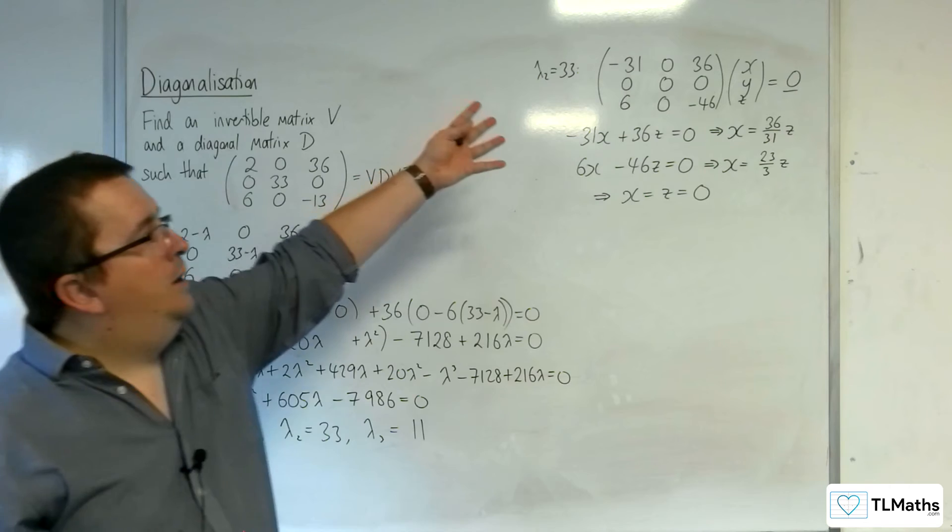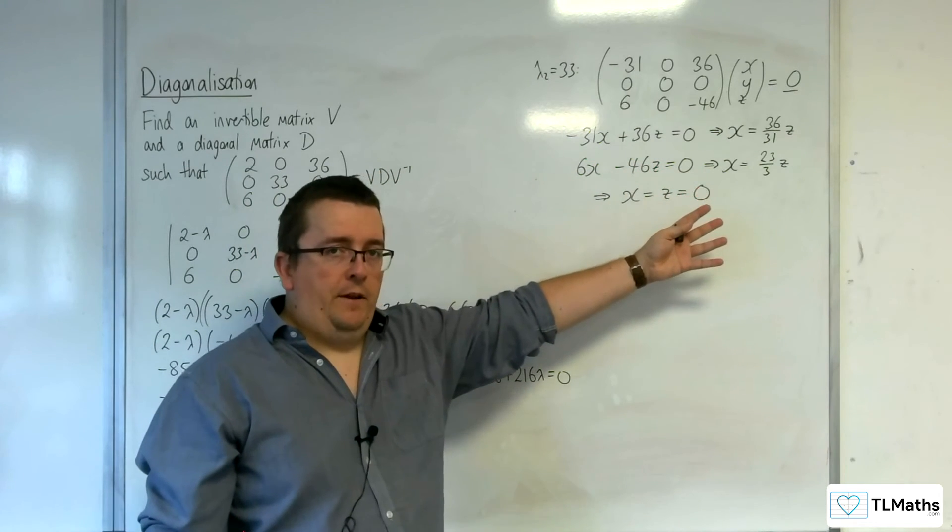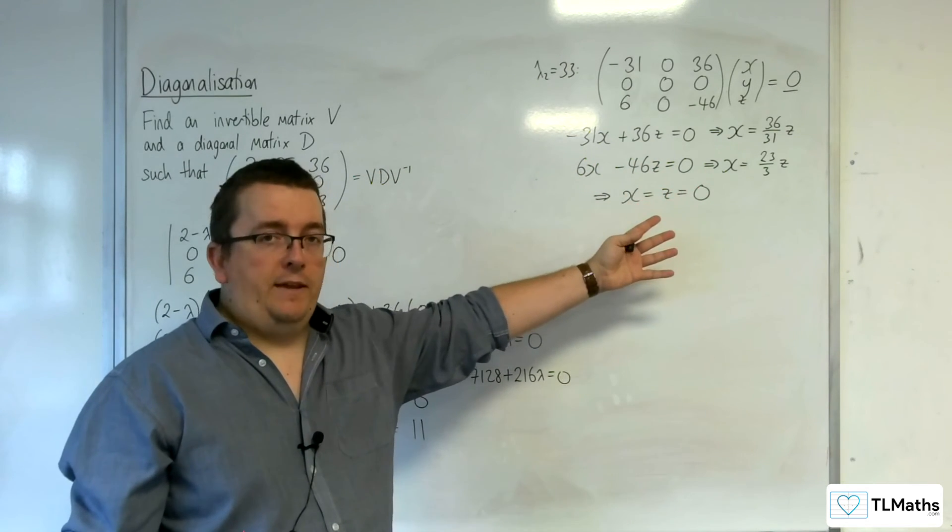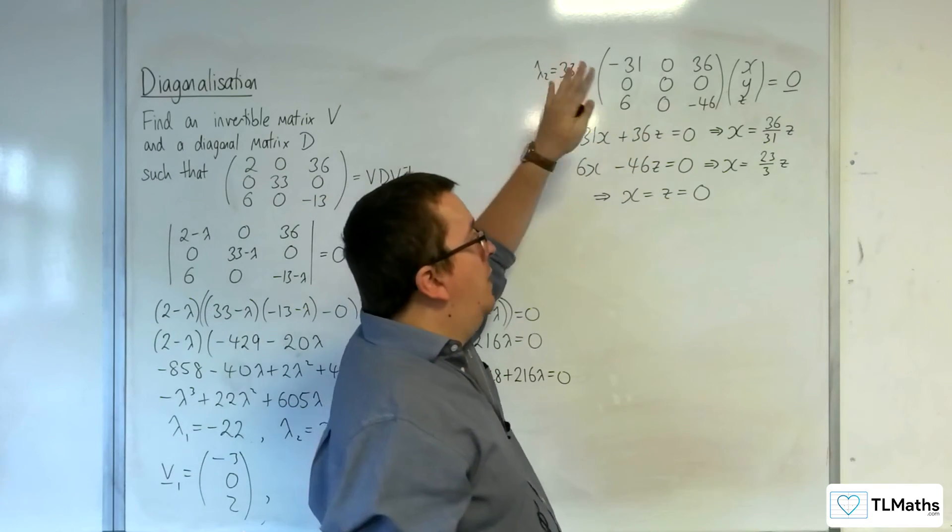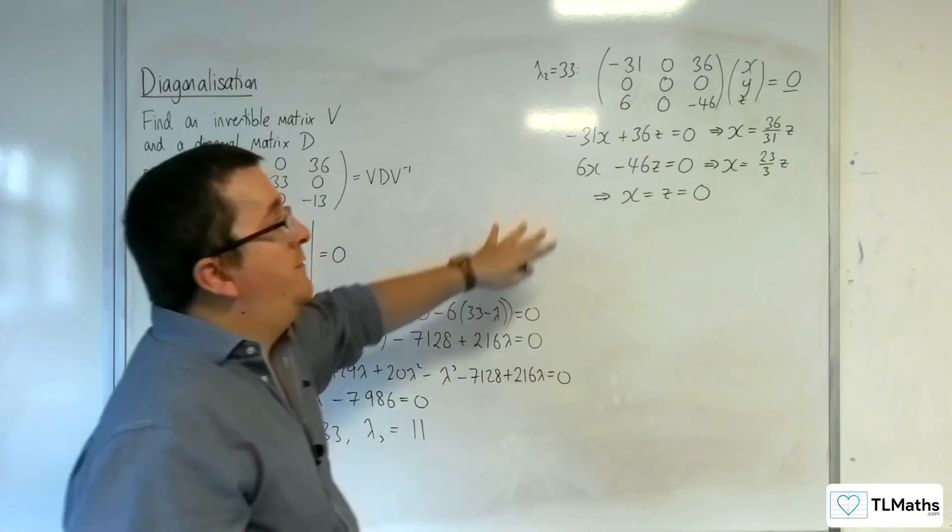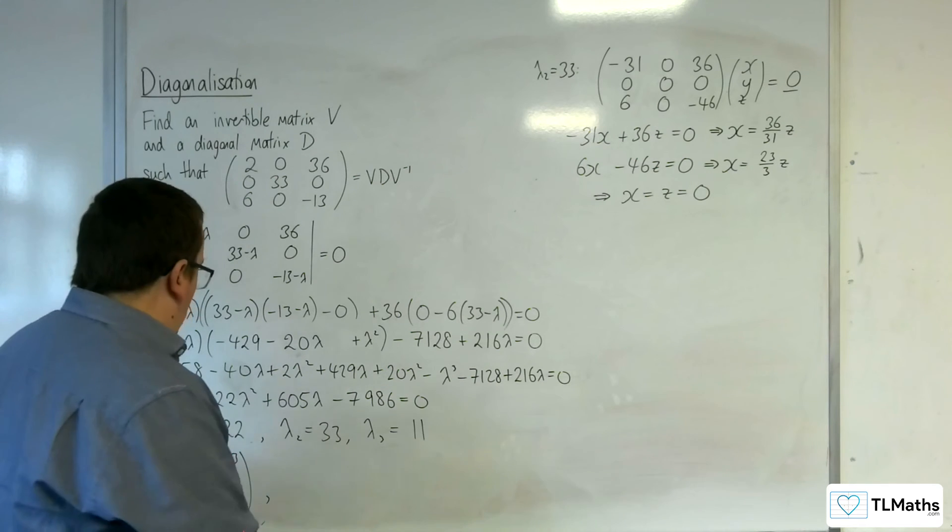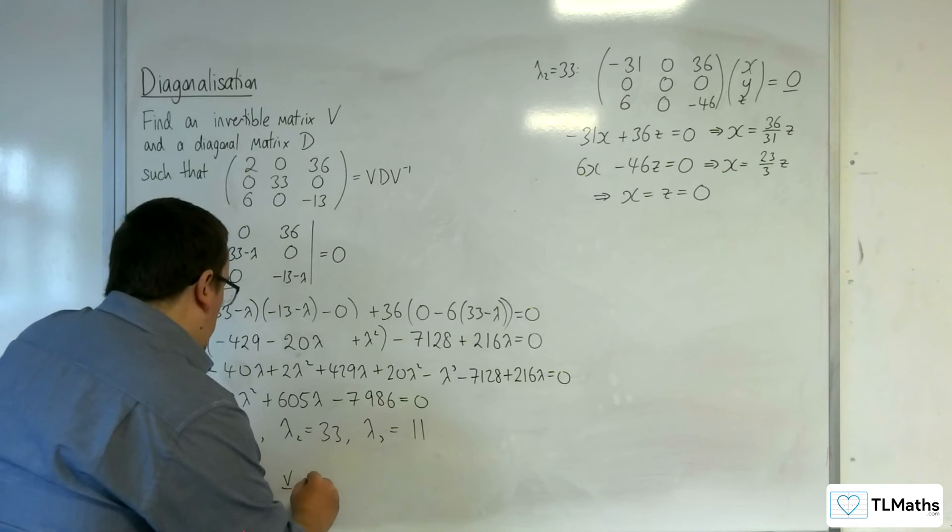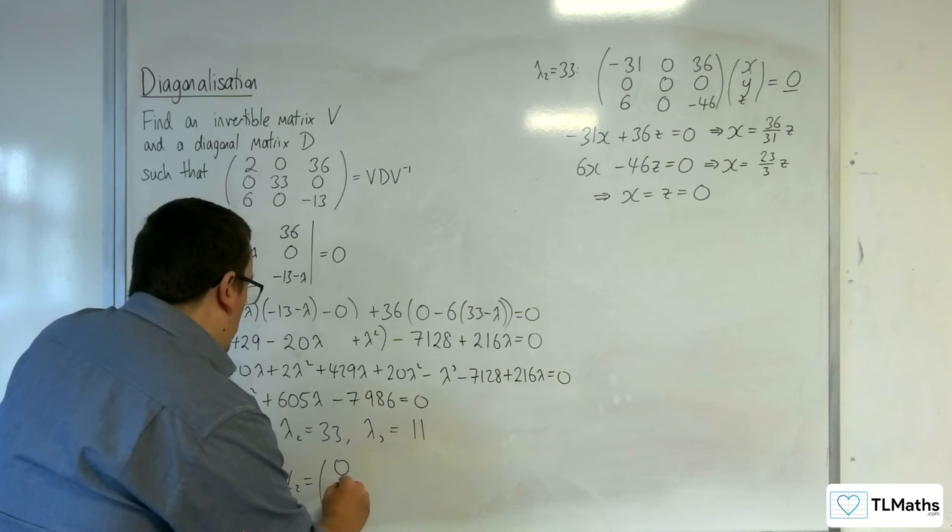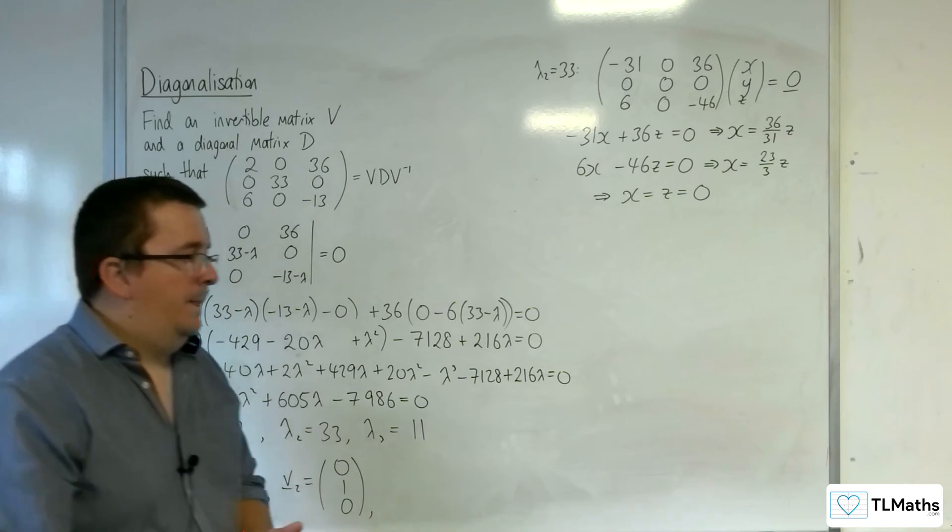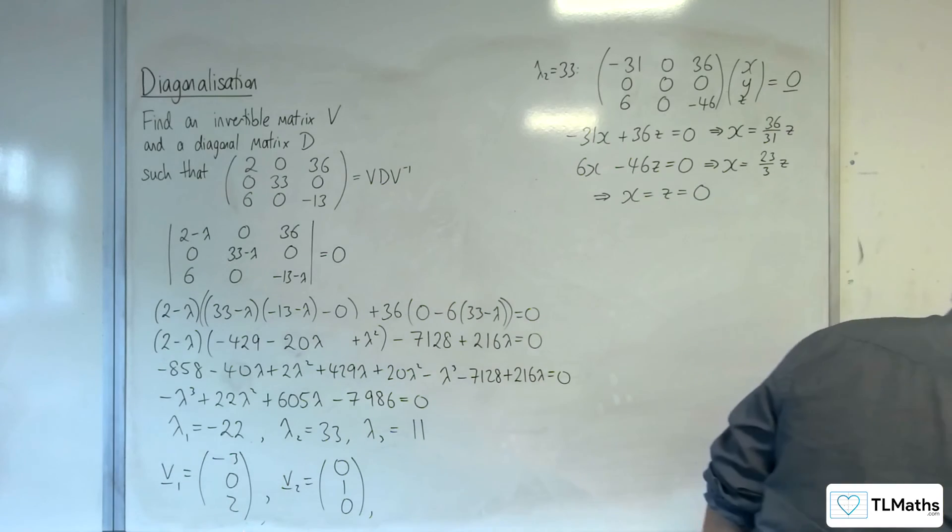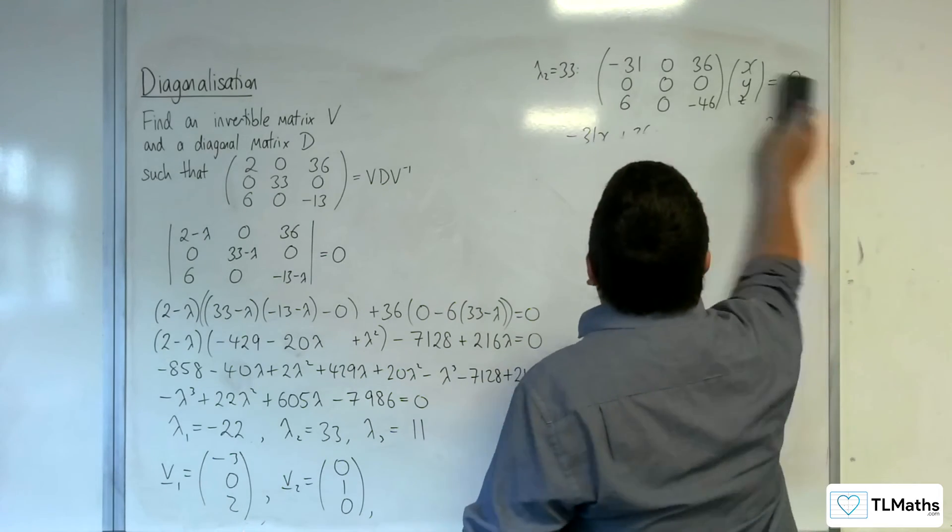Now, y can be whatever you like, can be your parameter t, because that's not going to be affected. Now, you can't have y being 0, because you can't have your eigenvector being 0, 0, 0. So v2 is 0, 1, 0. We'll put the y value in as 1. So that's the second one.